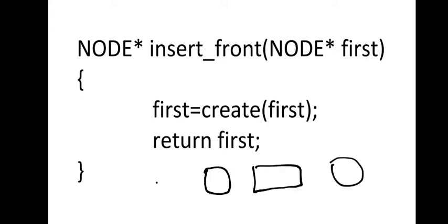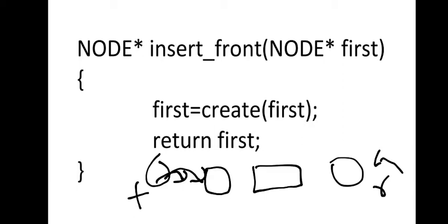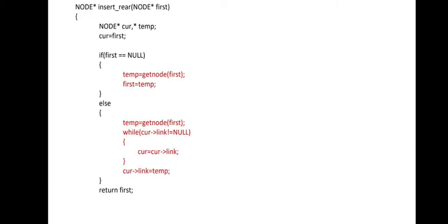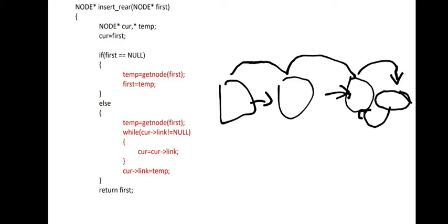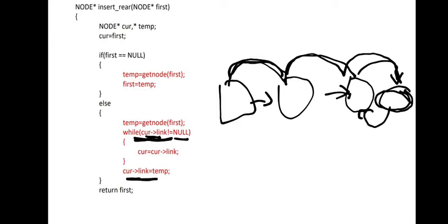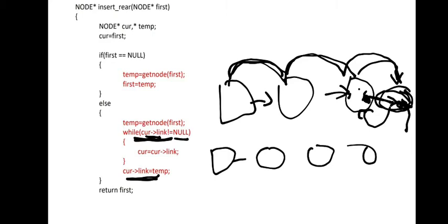Insert front means you create a node and insert it at the front position. Insert rear means you travel to the last position — starting from the front, travelling node by node until the last — and insert a node there. This happens with a while loop: while current arrow link is not equal to null, it keeps travelling. When current arrow link is null, you've reached the end, and current arrow link is set to temp, making the connection.